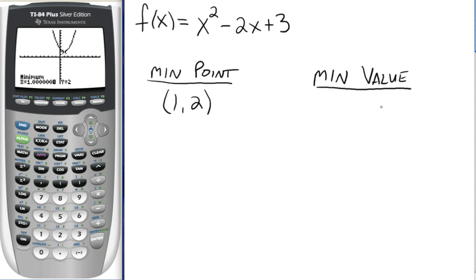So the minimum value, remember the value of a function is the y part of the point. So if this is the minimum point, the minimum value is 2. We can just read that right off the minimum point there.